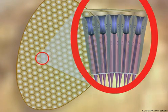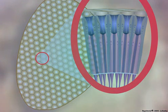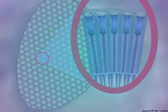Let us see how insect compound eyes function to detect light and perceive visual information.